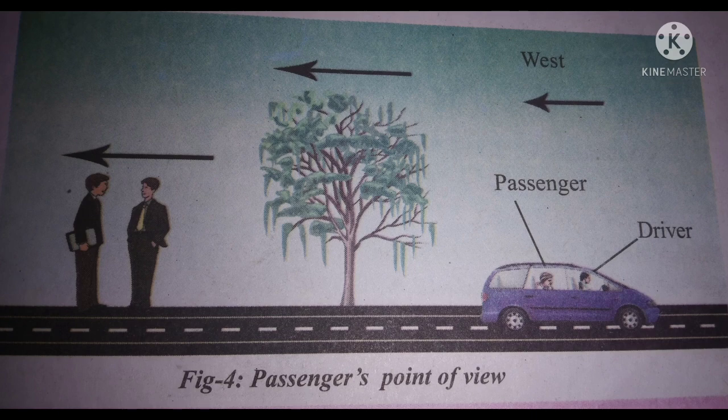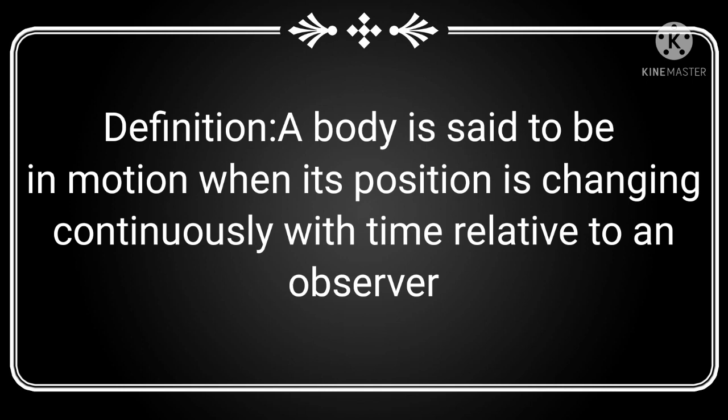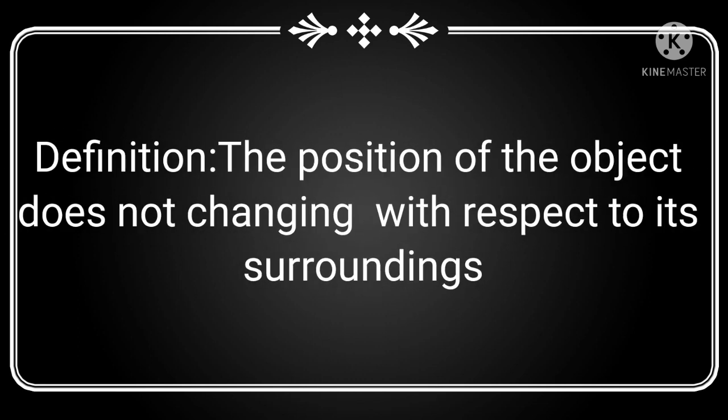From the above discussion, we can say that the motion or rest of an object depends on the observer. The definition of motion: a body is said to be in motion when its position is changing continuously with time relative to an observer. The definition of rest: if the position of a body does not change with respect to its surroundings, then the body is said to be at rest.